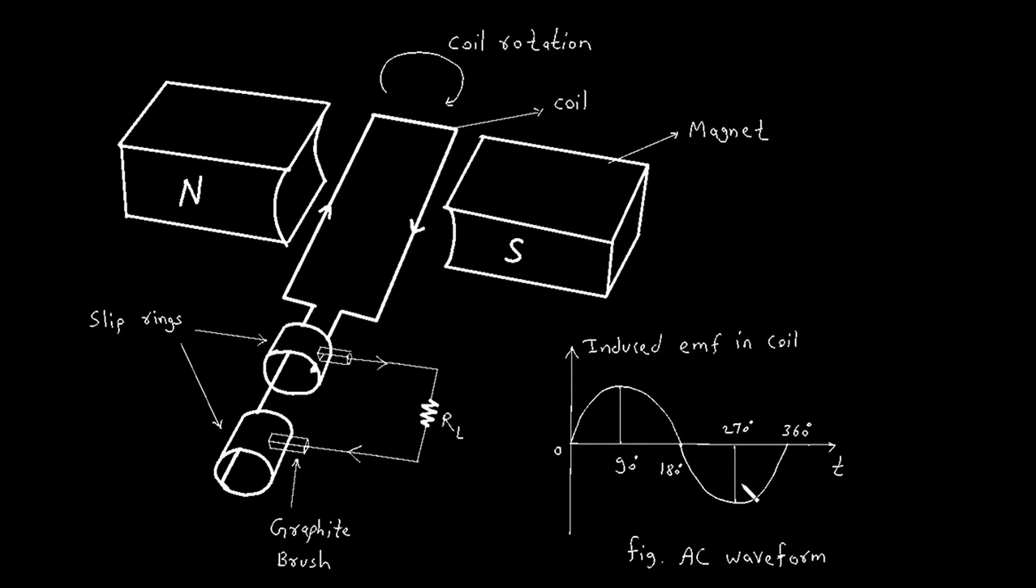At 270 degrees, the coil cuts through the field lines in the opposite direction, and the EMF reaches its maximum negative value. Finally, at 360 degrees, the coil completes one full rotation, and the EMF returns to zero, ready to start the next cycle.